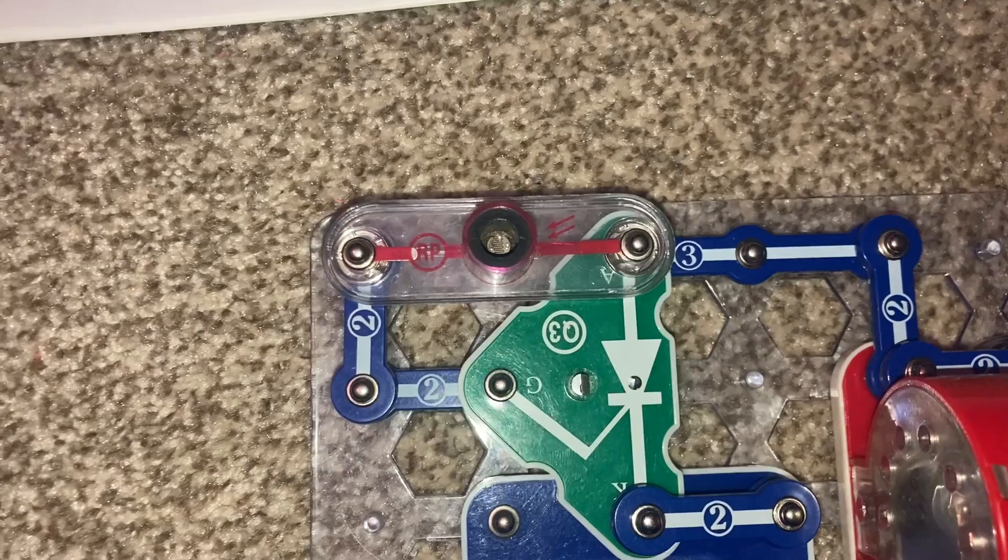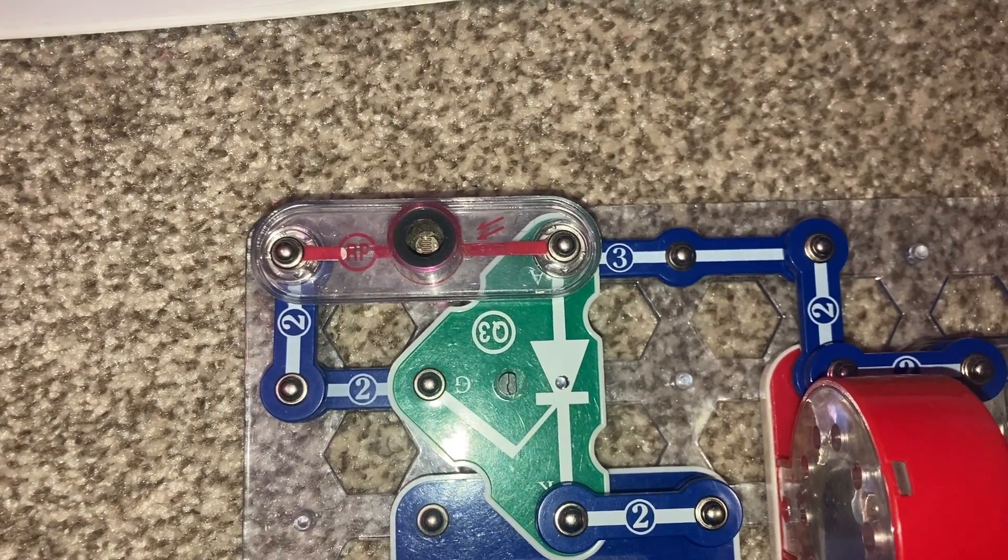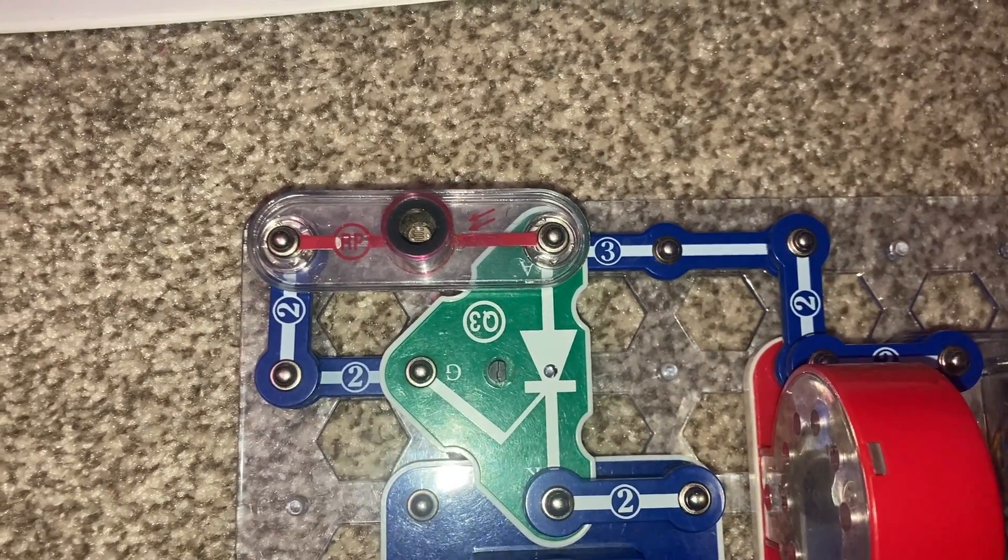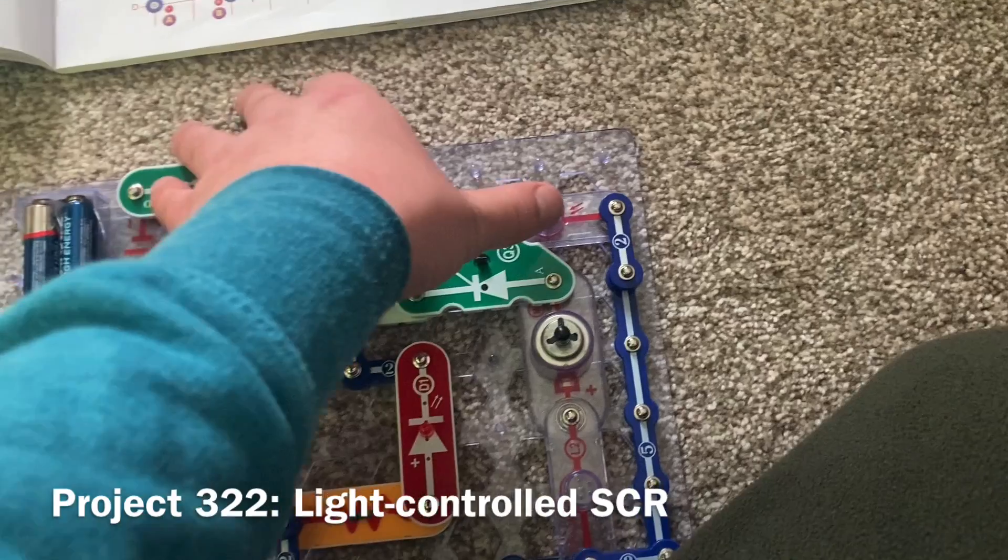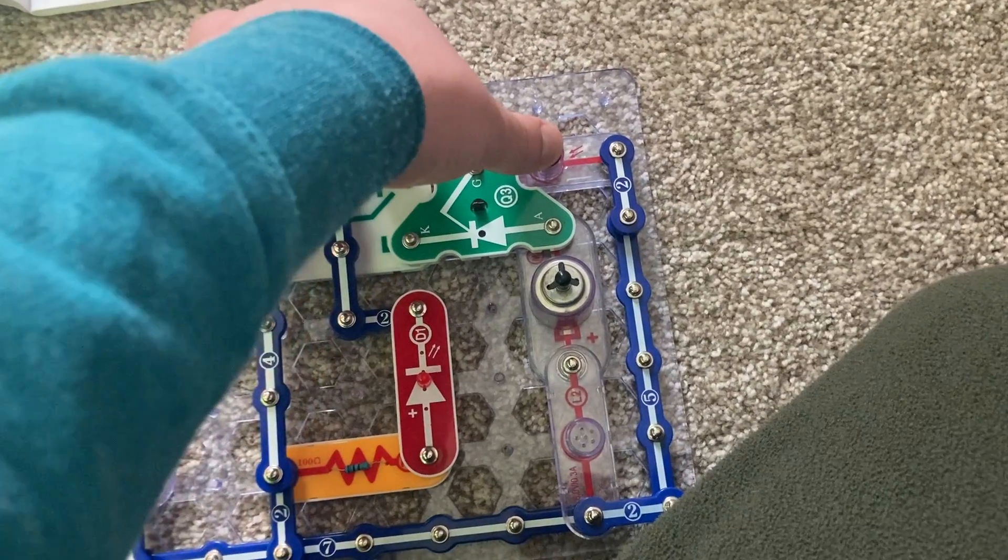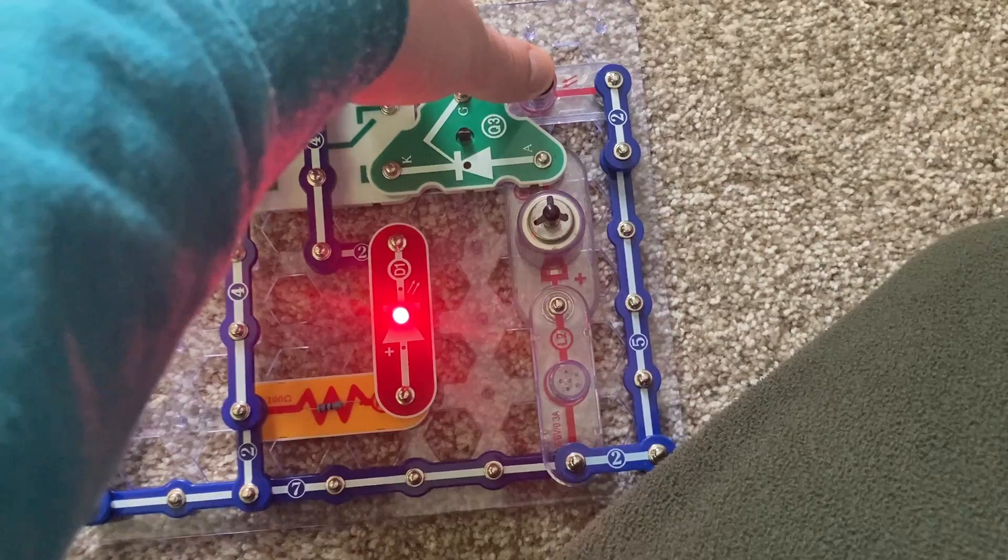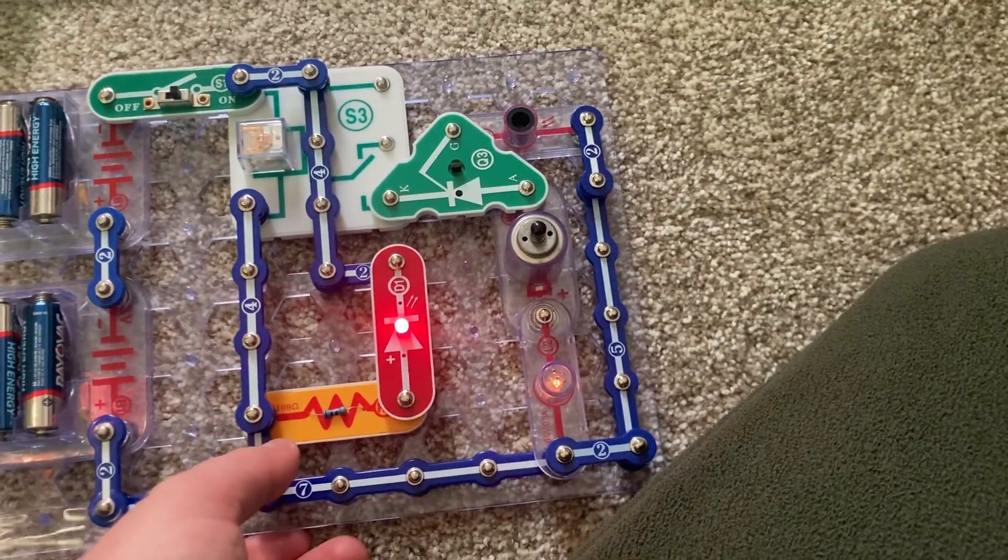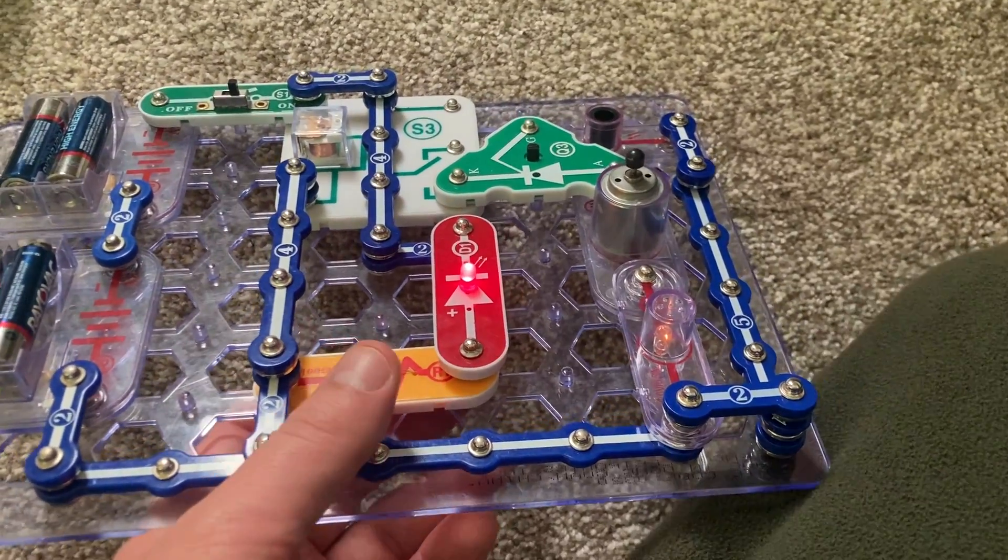When I cover the photoresistor and turn on the slide switch, the red LED comes on, but the motor and lamp stay off. Then when sufficient light reaches the photoresistor, the motor and lamp come on also.